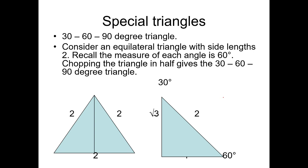In special triangles, we have the 30-60-90 degree triangle. Consider an equilateral triangle with side lengths 2. We have to recall the measure of each angle is 60 degrees. If we chop the triangle in half, it gives the 30-60-90 degree angle. Therefore, this now is 30, this is 60, and this is 90. That's what you call the special triangle.